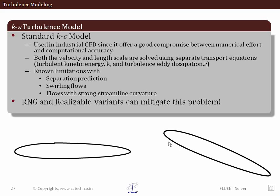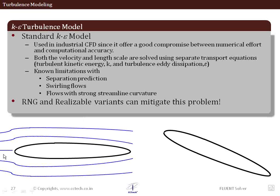There are some problems with the standard k-epsilon model, which is why we need to move on to the RNG and realizable variants of k-epsilon. One of the problems encountered is in flows where there can be flow separation. If the flow is completely uniform with no separation, this is not such a problem — k-epsilon standard can work very well. It's computationally quite cheap, fairly accurate, and works very well for highly turbulent isotropic flows.